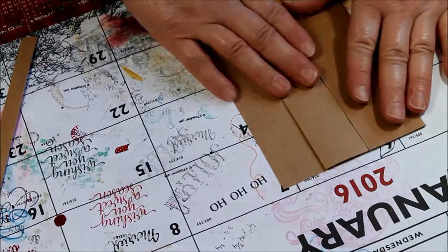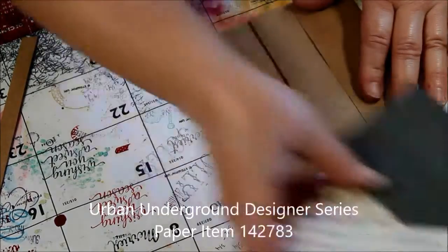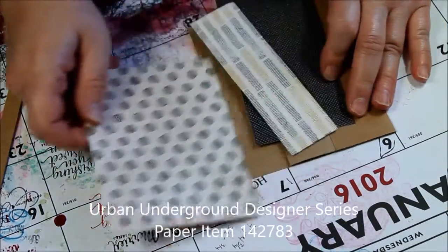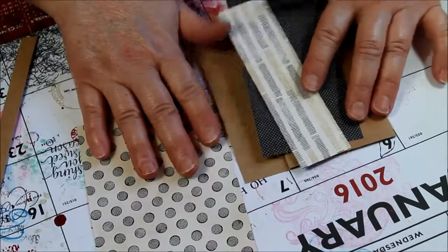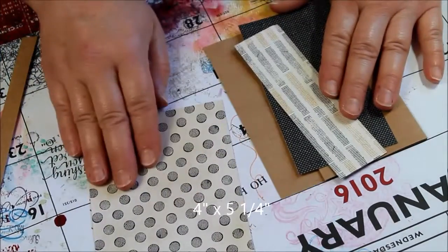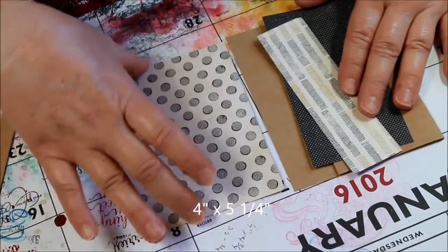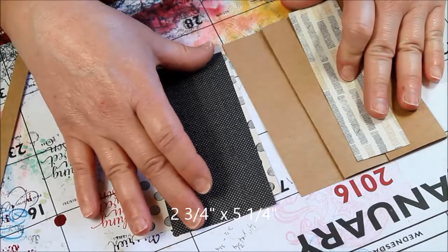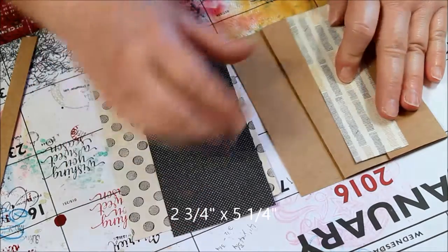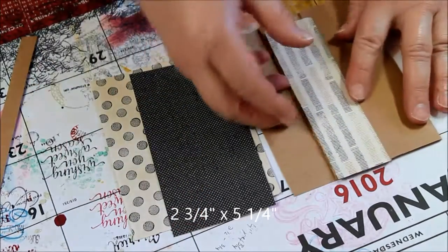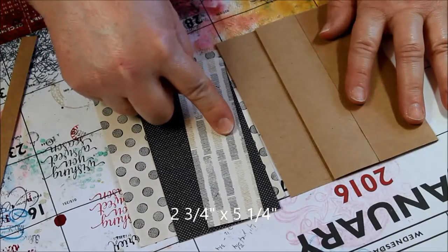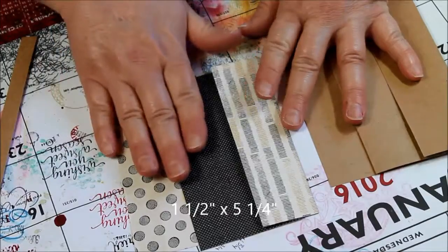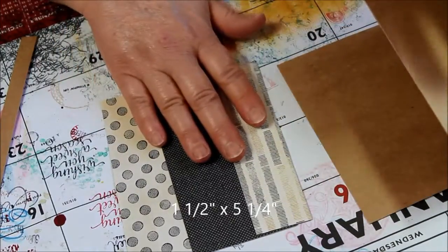Really simple. Then, we're going to take that Urban Underground paper, and we're going to cut one piece at 4 by 5 1⁄4. Now, they're all going to be 5 1⁄4 this way. And then, the medium-sized piece is going to be 2 3⁄4 by 5 1⁄4, and the little front one is going to be 1 1⁄2 by 5 1⁄4. And any of this paper, you can mix and match. It's just gorgeous. I love it for this particular project.